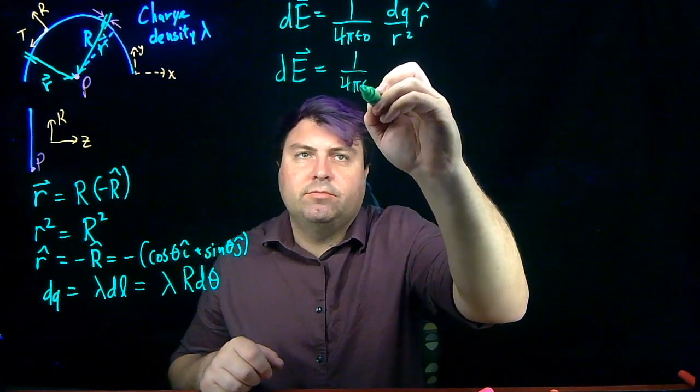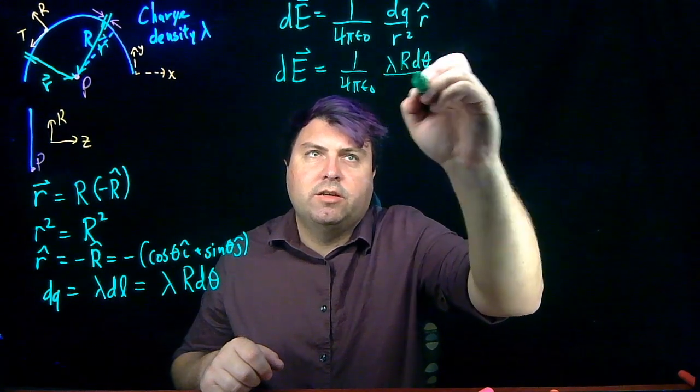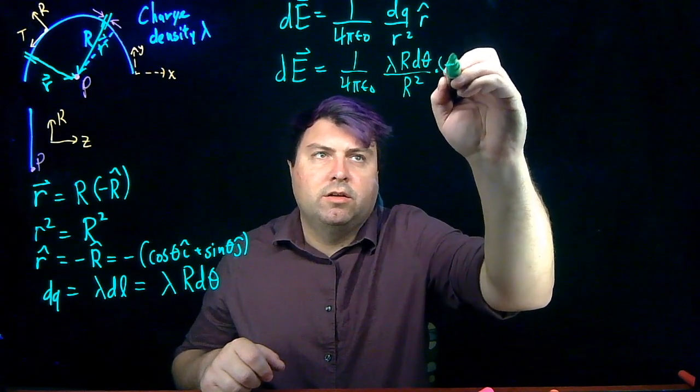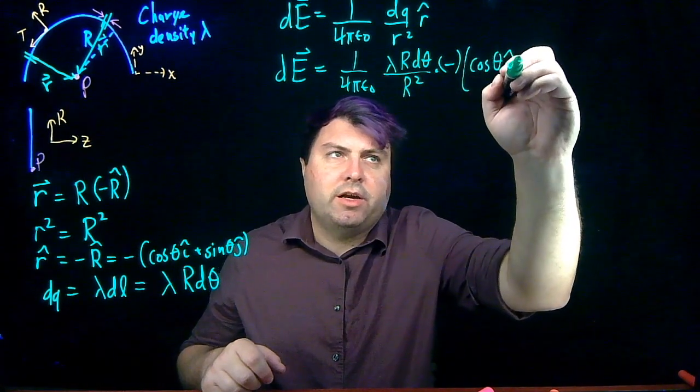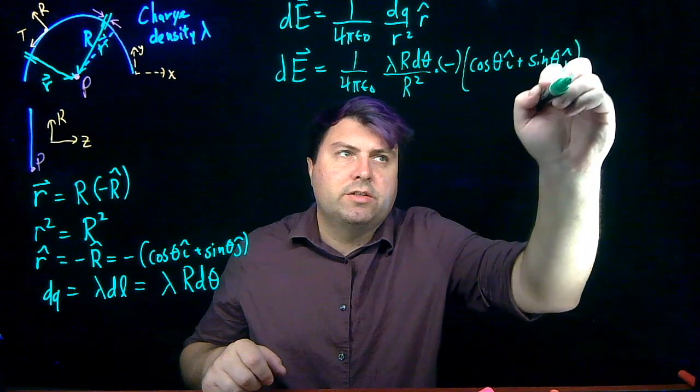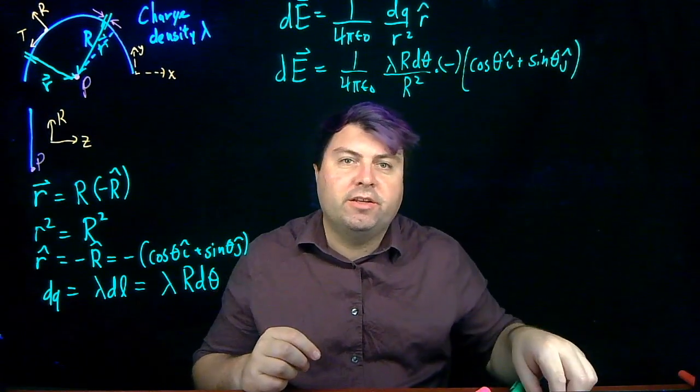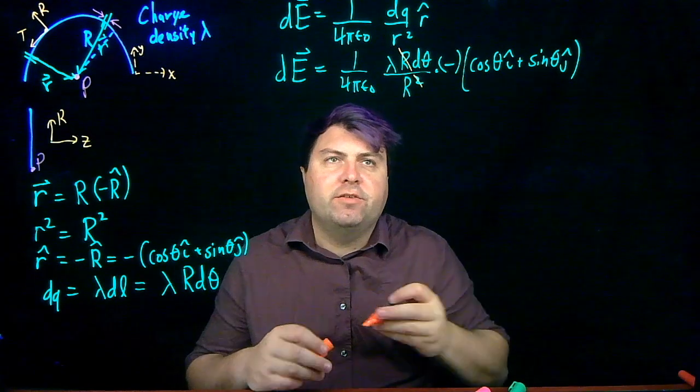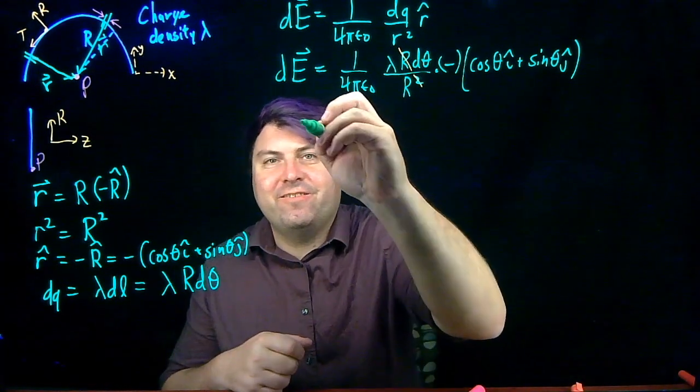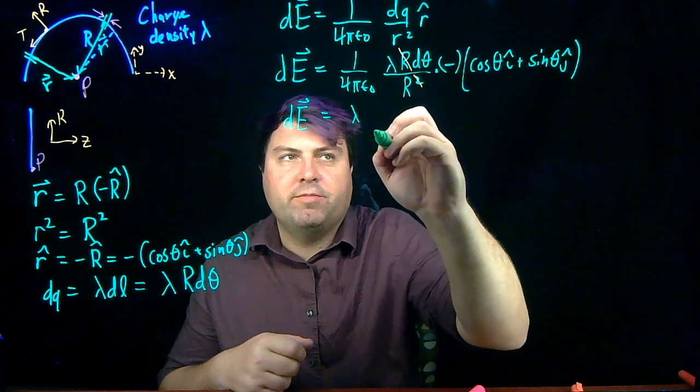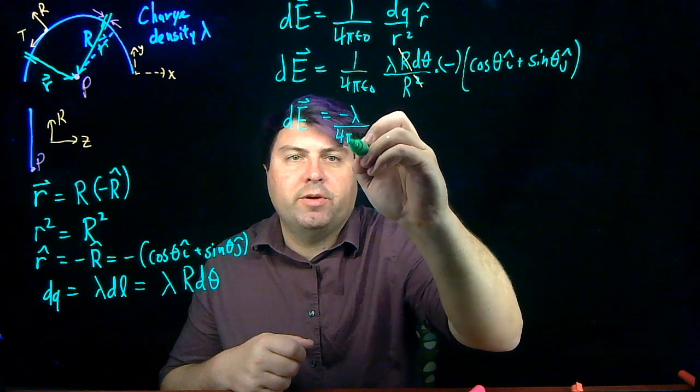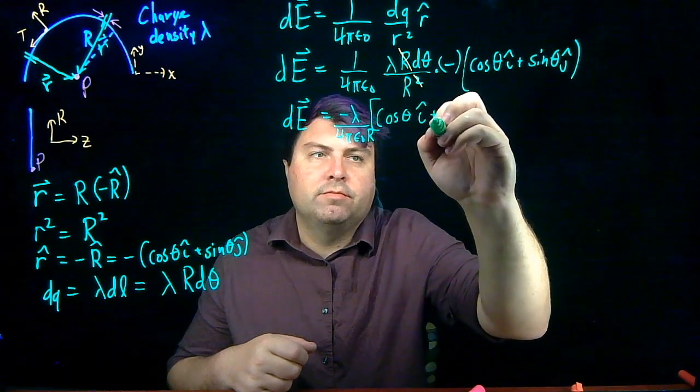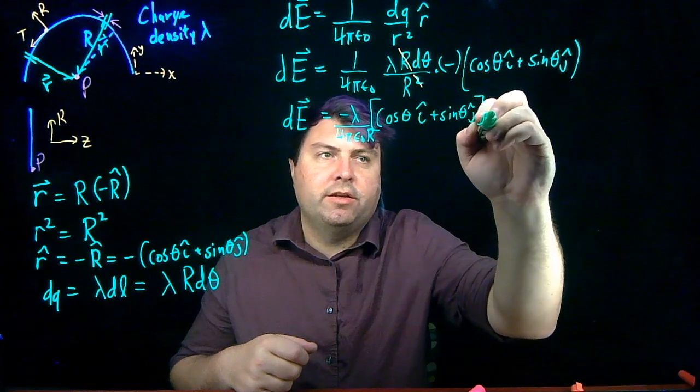So I can continue along with this. I have 1 over 4π epsilon naught. My dq is lambda r dθ. My r squared is capital R squared. And my r hat is negative times cosine θ i hat plus sine θ j hat. Well, I can do some consolidation. One of the consolidations I can do is I can cancel a term of r. I can move this negative sine over. And I can kind of just make it look a little bit nicer. So I have dE equals negative lambda over 4π epsilon naught r. And then I have this cosine θ i hat plus sine θ j hat dθ.